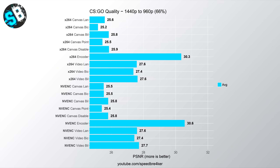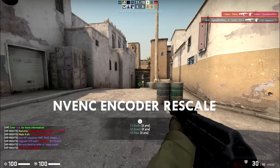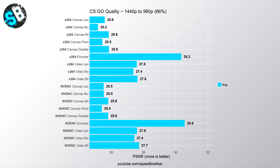At 66% downscale to 960p, there's a peculiar behavior: encoder downscaling produces the highest image quality, which is very much in contrast to the 75% downscale results. The reason is that at 960p there's a shift in the position of the video with the different filters — the Lanczos filter causes the image to shrink slightly at the corners, which doesn't happen with encoded downscaling. This misalignment causes much lower PSNR values since individual pixels no longer align with the original, making it an unfair comparison between encoder and other downscaling options.